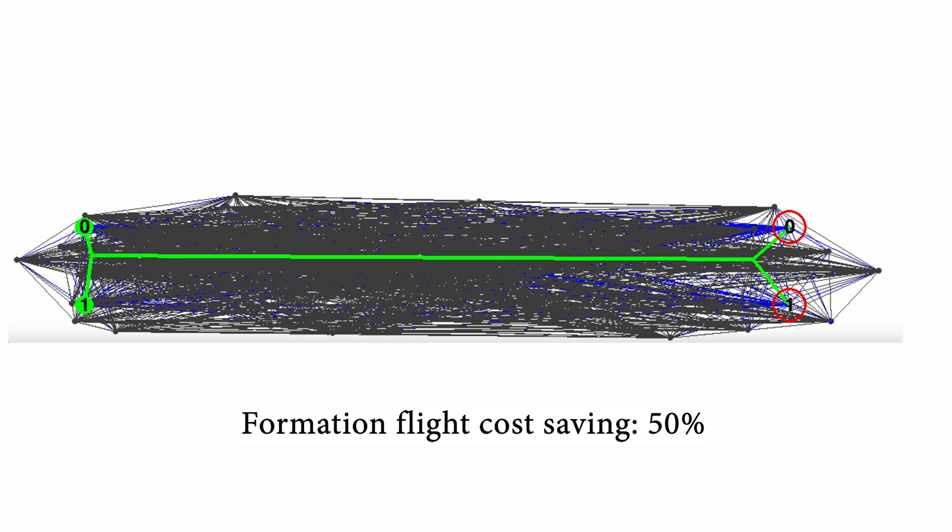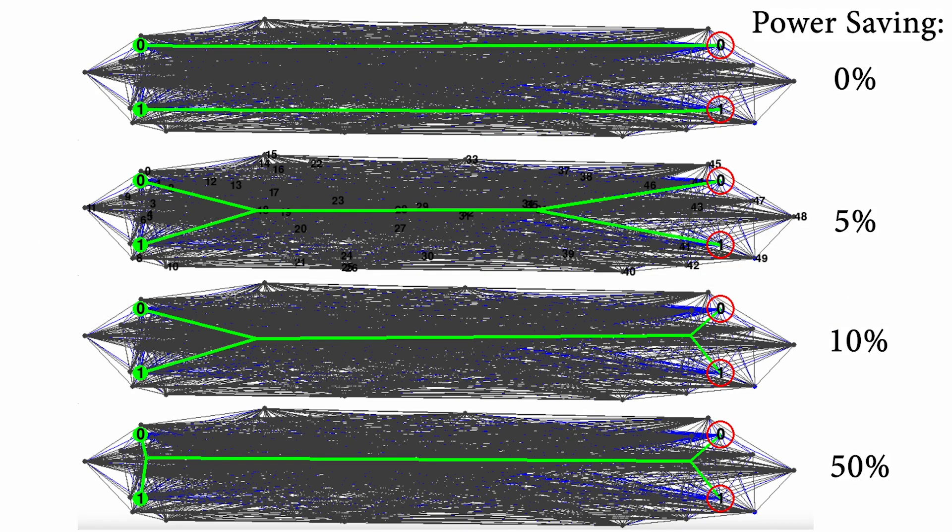So this is to say that even for a small power saving of just 5%, the paths are already affected. Now, this conclusion will, of course, depend on the exact location of the start and goal points in the specific application. So the full understanding of the impact that formation flight power saving can have on the final paths will require a further sensitivity analysis.